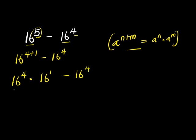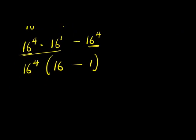So we can factor out 16 power 4 because we have it here on both sides. 16 power 4 times, this divided by 16 power 4 of 16 minus this divided by 16 power 4 I have 1. From here I have 16 power 4 times 15.